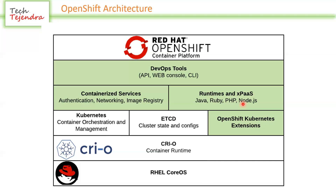On top of that is OpenShift - we have OpenShift Kubernetes extensions. We have runtimes, including a concept called S2I (Source-to-Image), which is why OpenShift has so many built-in runtimes for Java, PHP, Node.js, and many others. Then we have containerized services - authentication, networking, image registry - all provided on top of Kubernetes by OpenShift. The top layer is the interface: we can connect to OpenShift via the API, the web console, and the CLI. These are the key access points for administration, deployment, and development inside OpenShift.